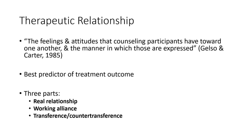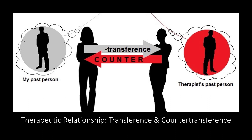Transference and countertransference deals with distorted perceptions that individuals have of others based on previous relationships. When that is happening from the therapist's side, it's called countertransference. When it's happening from the client's side, it's transference. Imagine a relationship in which a female is explaining to her boyfriend that she is not his ex after seeing him exhibit some behavior toward her. She may have concerns that he is treating her like someone that she is not. In a way, these concepts are familiar to us in everyday ways.